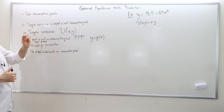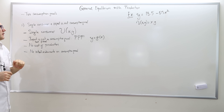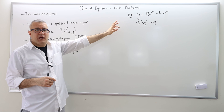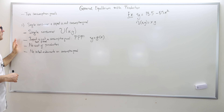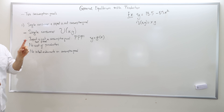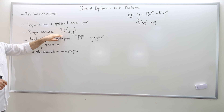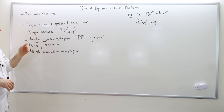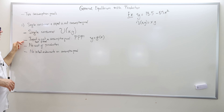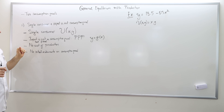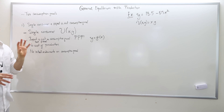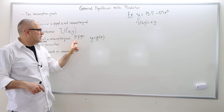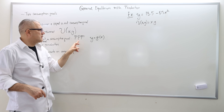Here is our first model, where we have a single consumer and the input is not a consumption good. These are the model-specific assumptions, and here are the numerical example-specific assumptions. We have a single consumer with a utility function — she enjoys both good X and good Y, which are our two consumption goods. The input is not a consumption good, so we don't have a notation for input, but it's fixed. What we have is what we call the production possibility frontier, or PPF — it's a function between X and Y.